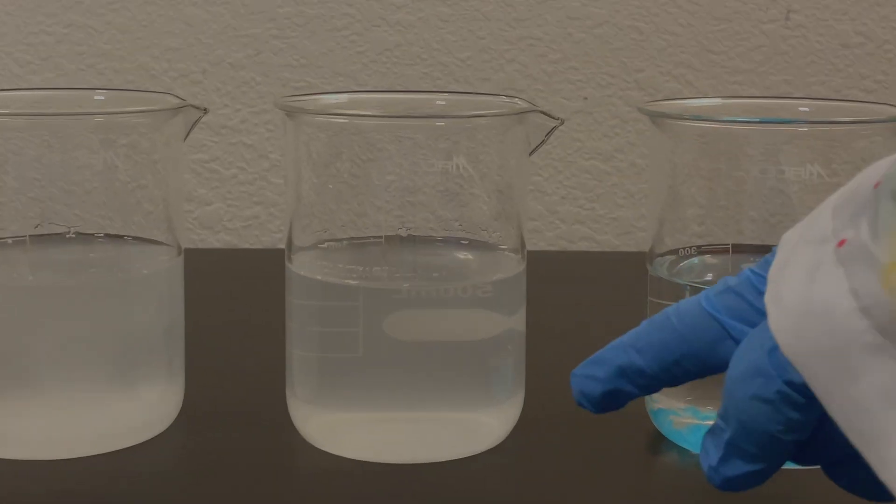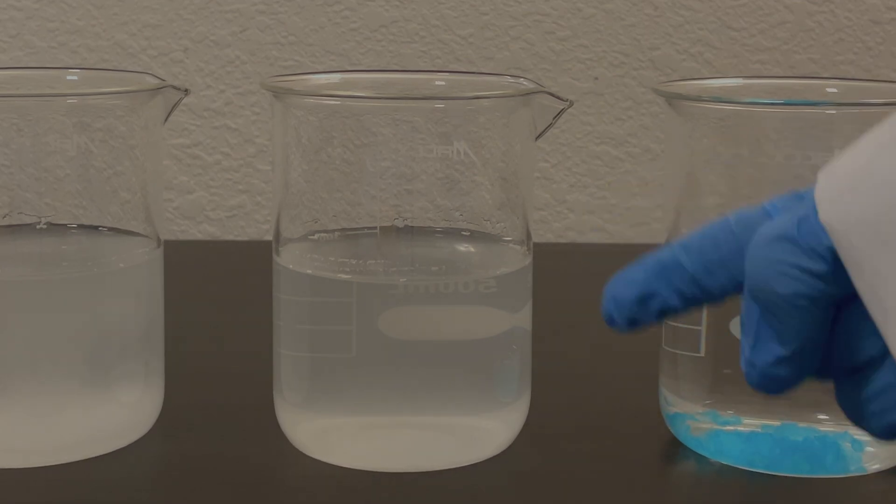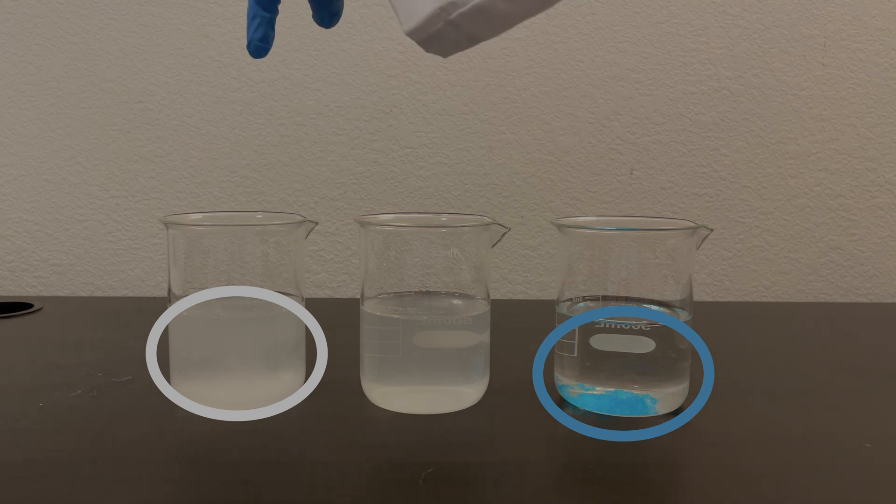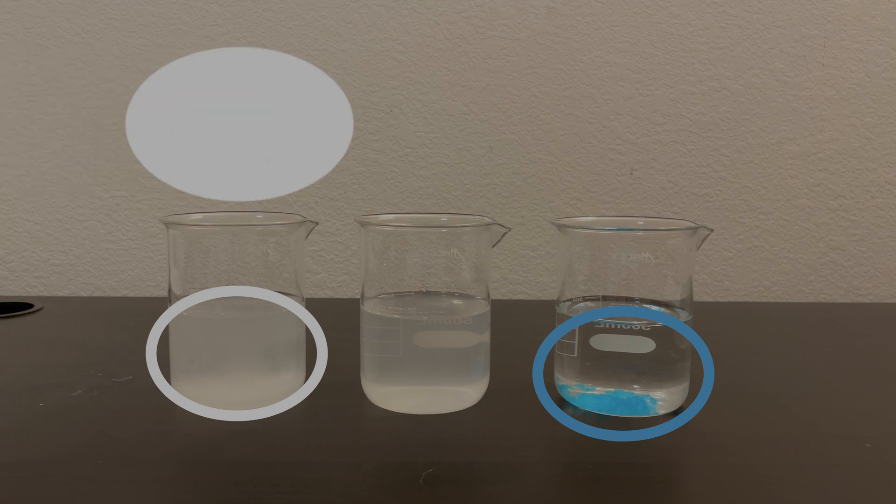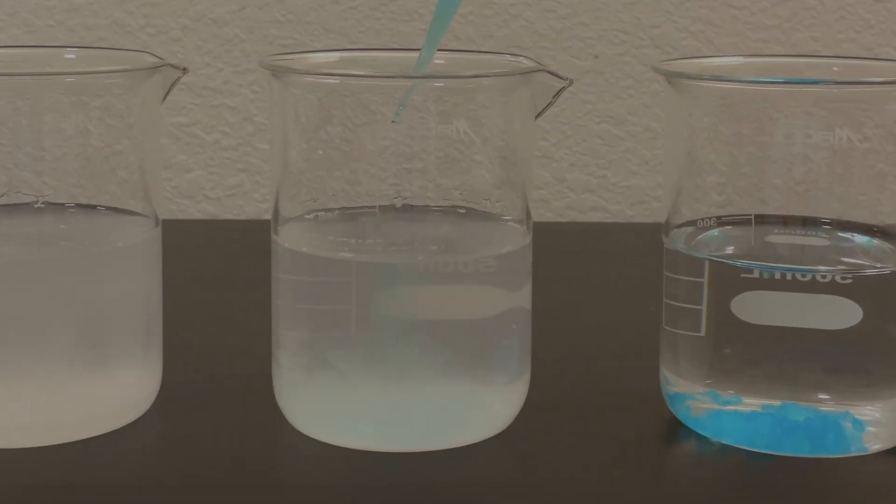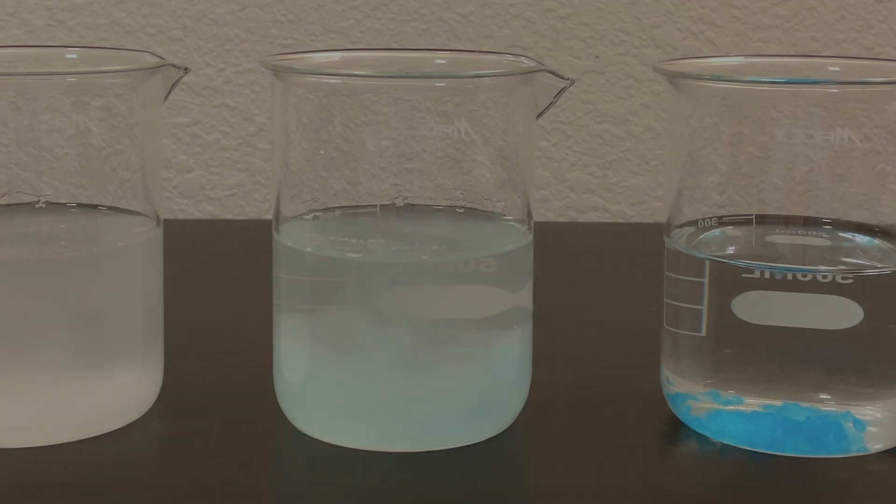Now, in this middle beaker, I'm going to create a third solution that will contain a mixture of the two precipitates formed in these other two beakers. If you understand color wheels, since I would be combining a white solid with a blue solid, you might expect that I would get a light blue precipitate. In fact, you would be correct.